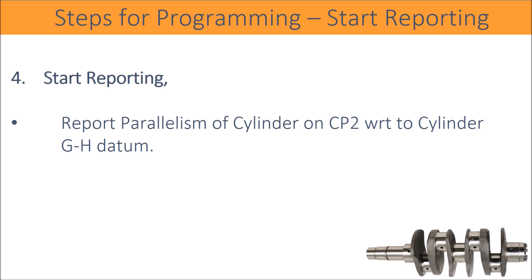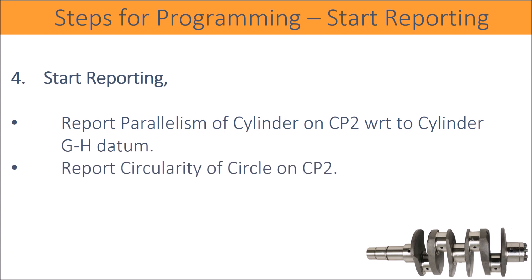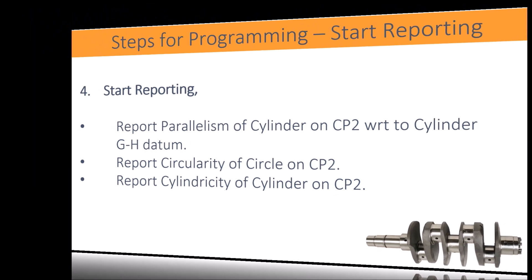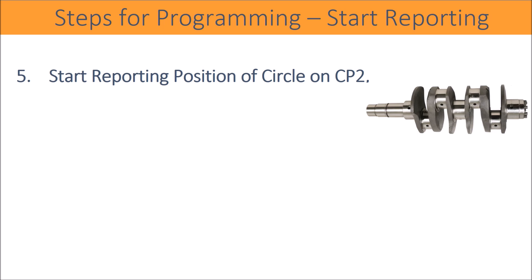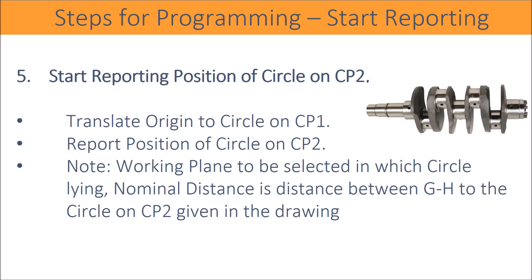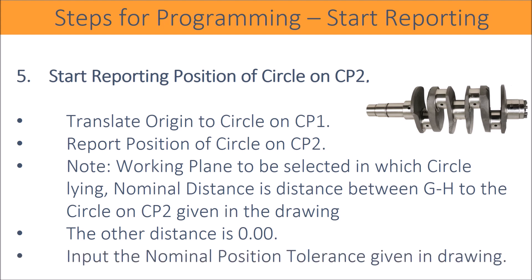Report parallelism of the cylinder on CP2 with respect to cylinder GH datum. Report circularity of the circle on CP2. Report cylindricity of the cylinder on CP2. For position of CP2: translate the origin to the circle on CP1, then report position of the circle on CP2. Note: select the working plane in which the circle lies. The nominal distance is the distance from GH to the circle on CP2 as given in the drawing; the other distance is 0.00. Input the nominal position tolerance given in the drawing.